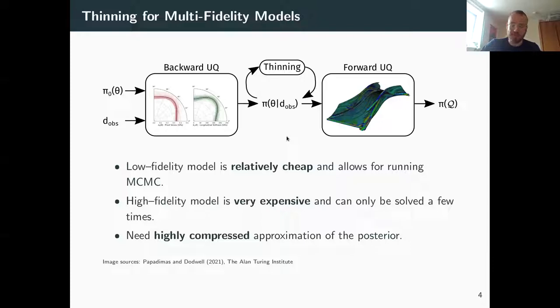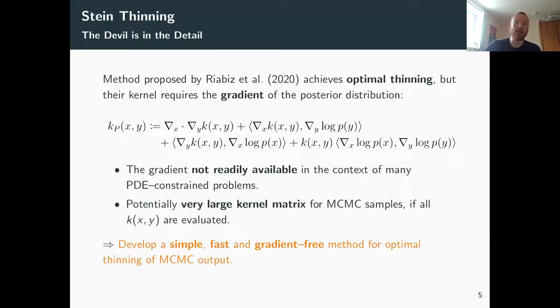It becomes sort of like an optimal design problem, how to choose the design points so that we best represent the posterior distribution that we obtain from our low fidelity model. That means again we need to compress the output from the Monte Carlo or from the Markov chain Monte Carlo sampler.